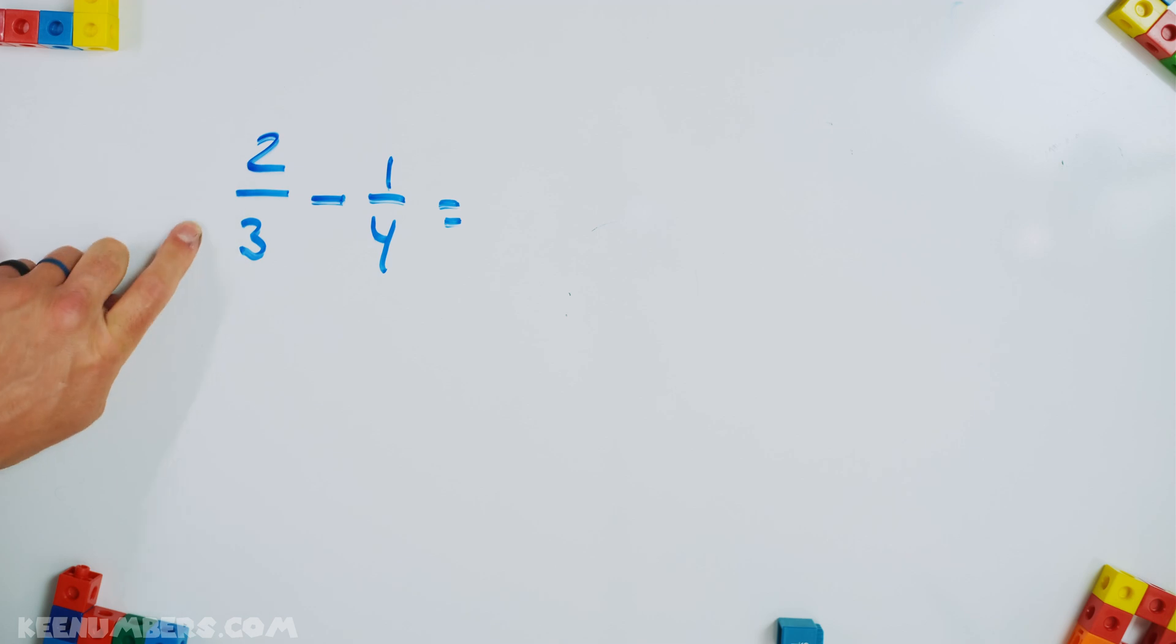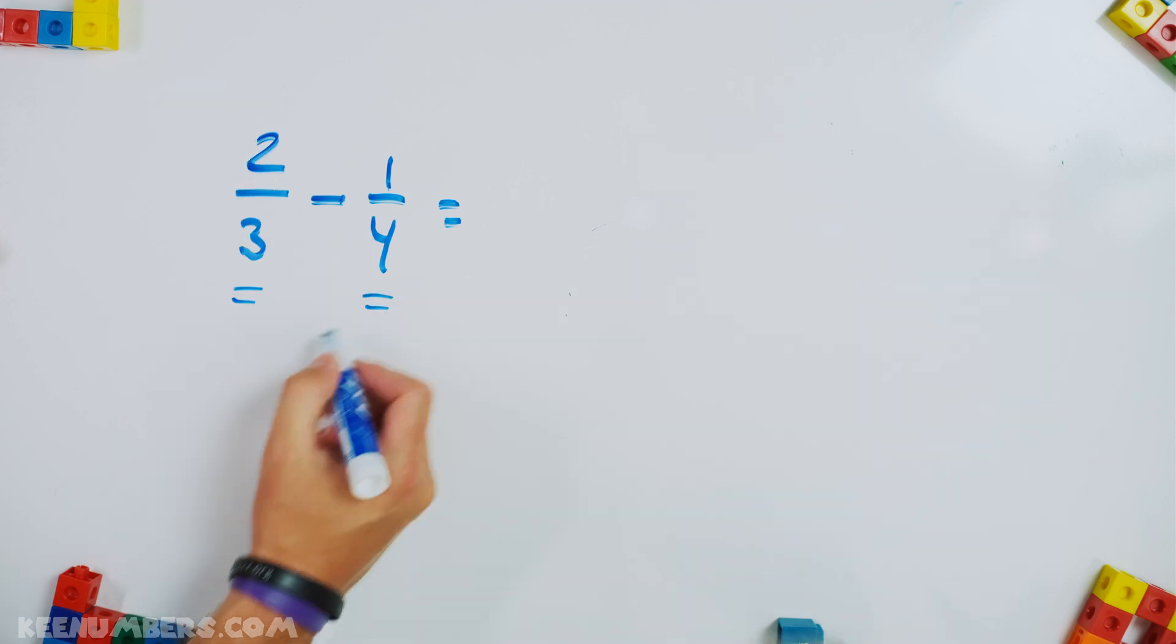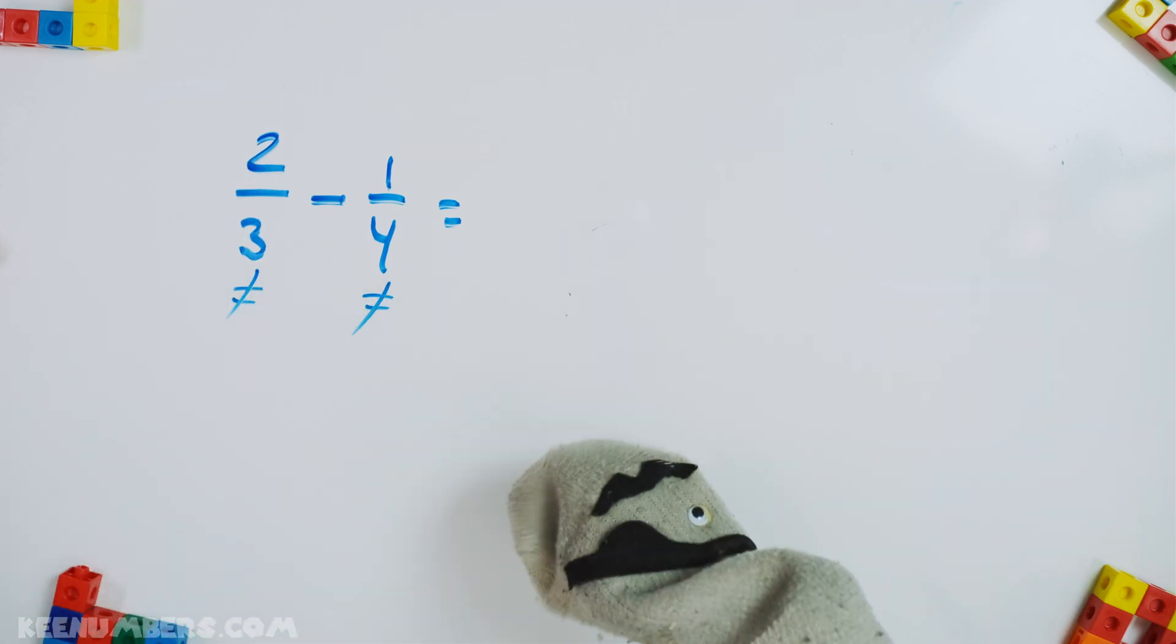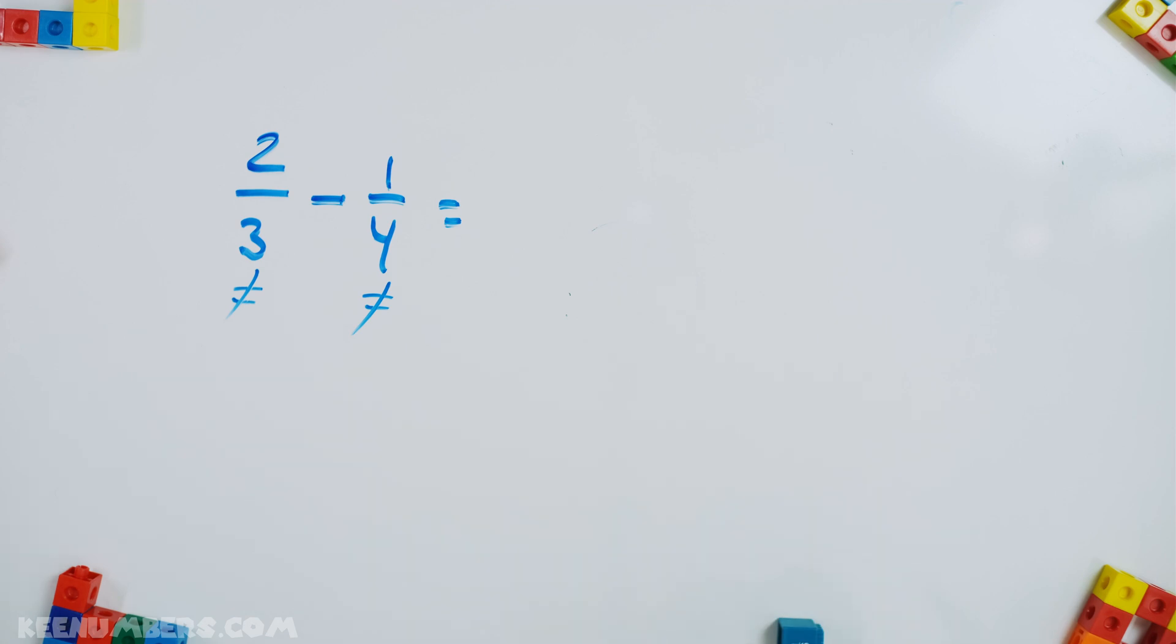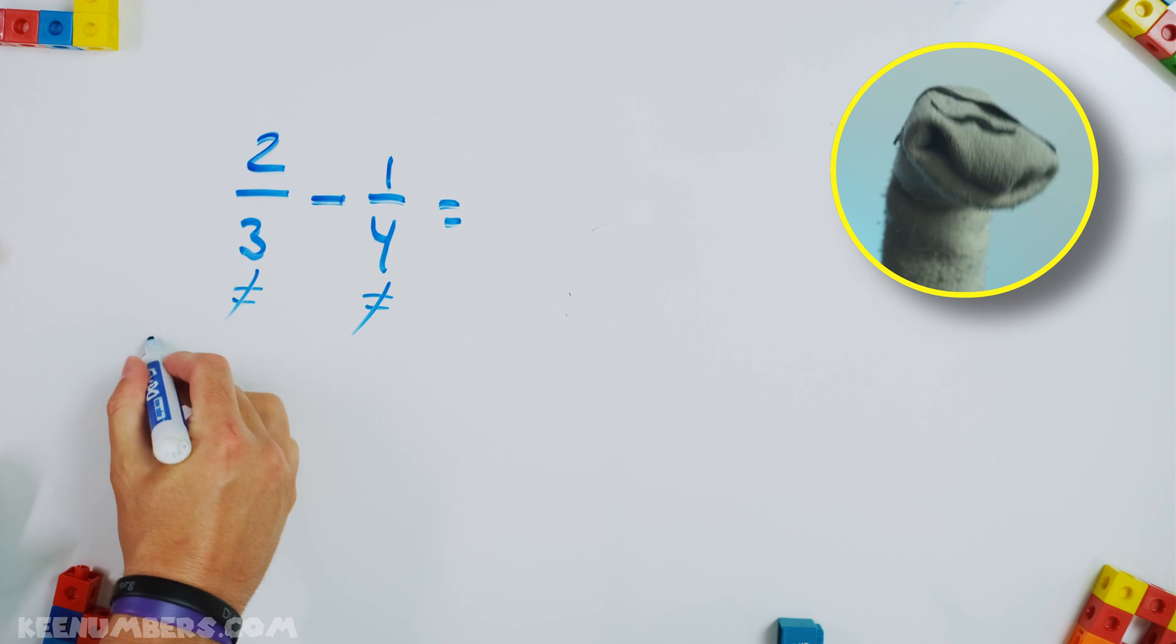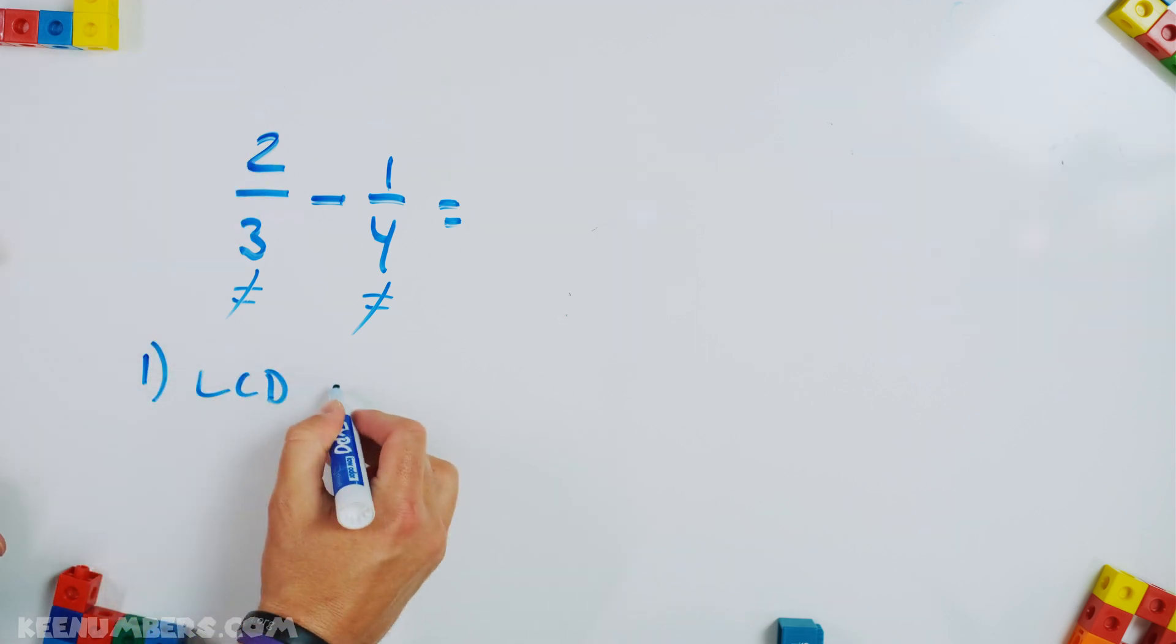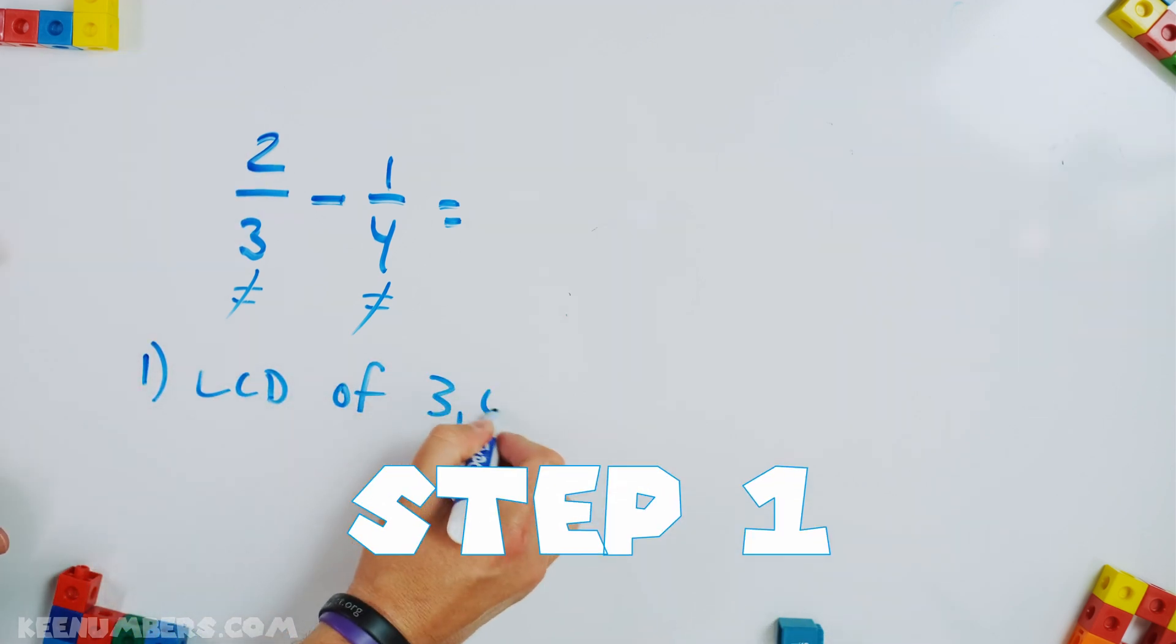Let's look at another example. We're going to do two thirds minus a quarter. Are they the same denominators? No. They are not equal. Hey, it's Pirate Sam. Thanks for helping us out. Let's subtract. Step one though, we need to find the LCD of three and four.